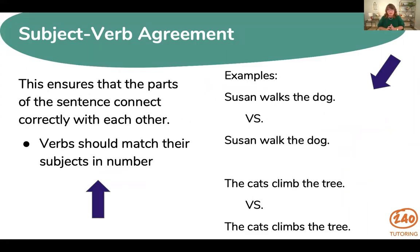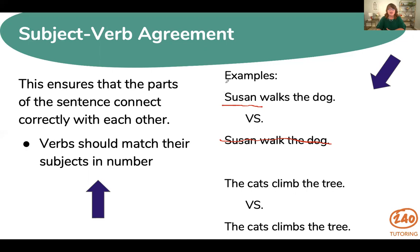Now let's look specifically at subject-verb agreement. This is what ensures that the parts of our sentence connect together. You can separate a sentence into a subject and a predicate, and subject-verb agreement allows those things to match up in number. The verb should match the subject in number. For example, 'Susan walks the dog' versus 'Susan walk the dog.' Susan is our subject and it is singular, so the verb gets an s: 'Susan walks the dog.'